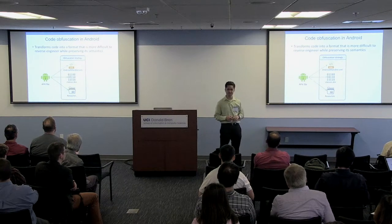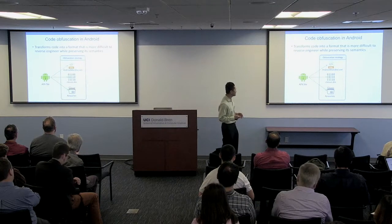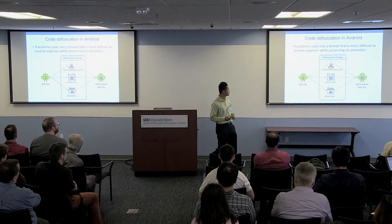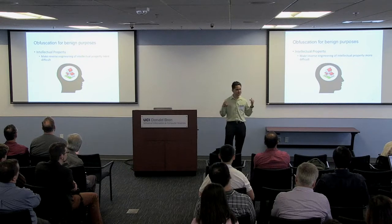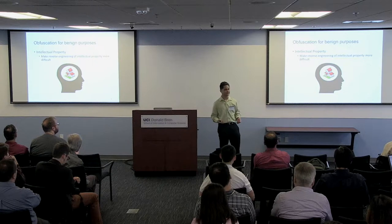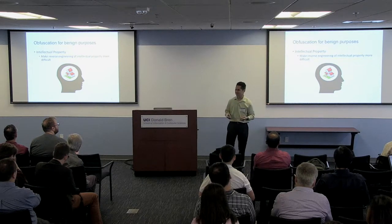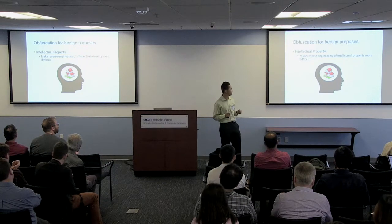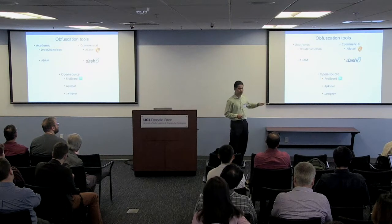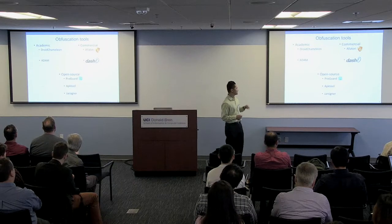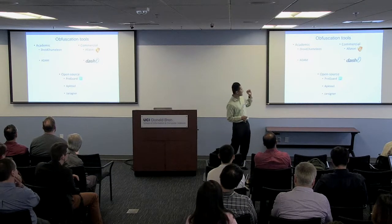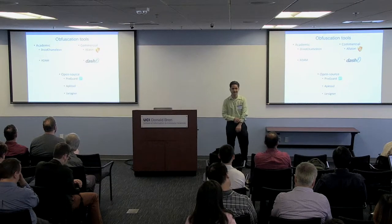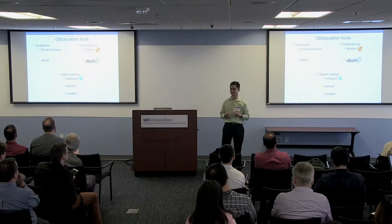An obfuscation strategy takes these three different parts of an app, applies one of these obfuscation strategies, and reproduces the APK in an obfuscated form. These obfuscations aren't just useful for malicious authors trying to evade detection — they're also good for benign app developers who want to make it harder for intellectual property to be reverse engineered. Many obfuscation tools have been built for this purpose, including commercial tools like Alatoria, open source tools like ProGuard, and research tools such as CoreGuard.